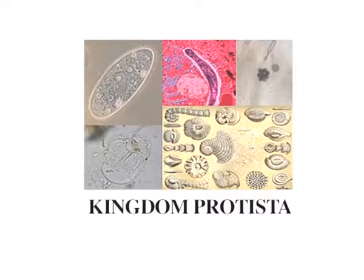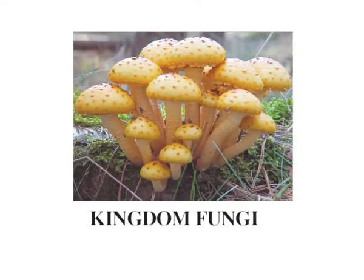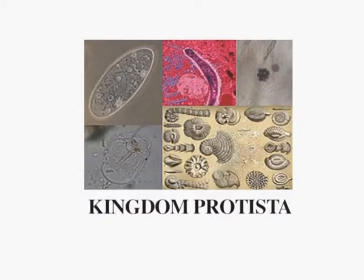Dear learners, welcome to the National Institute of Open Schooling. Today I am going to talk about Kingdom Protoctista and Kingdom Fungi. Kingdom Protoctista is also known as Protista, and just like Monerans, they too are unicellular organisms.